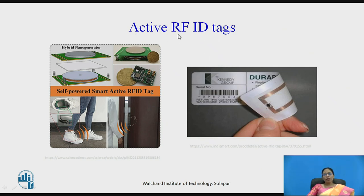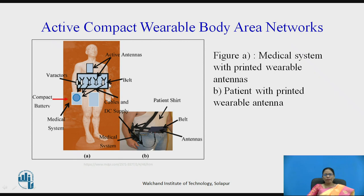Active RFID tags are another application. RFID tags come in passive and active varieties. Active RFID tags, as seen in malls, are provided with conducting elements. A self-powered smart active antenna RFID tag can be mounted inside a shoe or onto doors. Additionally, an active compact wearable body area network uses an antenna array system mounted on a belt with a small power source that a patient can wear to monitor health parameters.